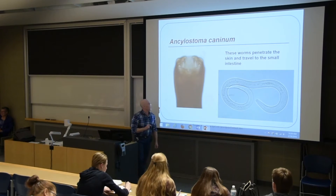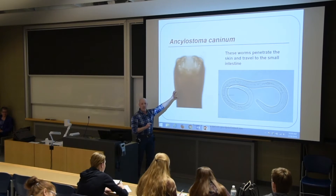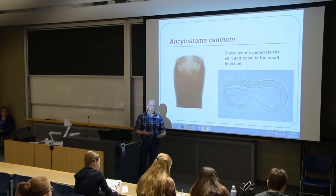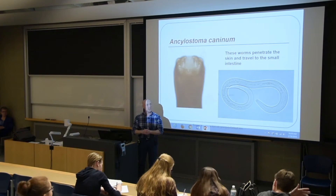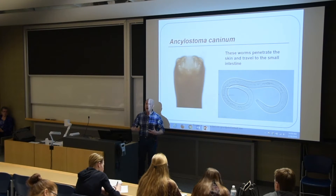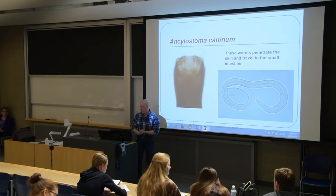Here's another one called Ancylostoma — this is clearly the head region, with sharp structures you can call teeth. These worms can actually penetrate the skin. If you're walking without shoes — more common in developing countries — these worms penetrate the skin and make their way to the small intestine, where the parasite latches on. One parasite can drink about 0.3 mls of blood per day, so with a severe, high-intensity infection you can lose a lot of blood.